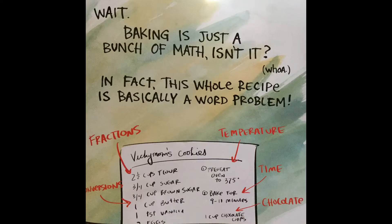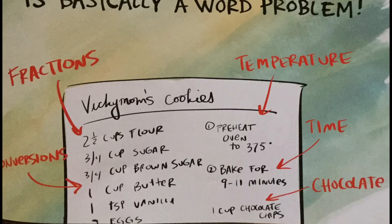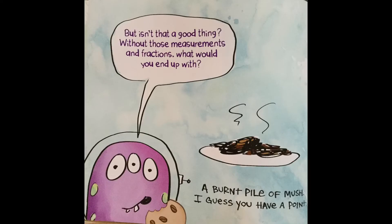In fact, this whole recipe is basically a word problem. Let's look at Vicki's Mom's Cookies recipes. We have some fractions, two and a half cups. We have conversions. We have temperature, preheating the oven to 375 degrees. We have time, bake for nine to 11 minutes. And we have, well, looks like we have chocolate. But isn't that a good thing? Without those measurements and fractions, what would you end up with? A burnt pile of mush. I guess you have a point.